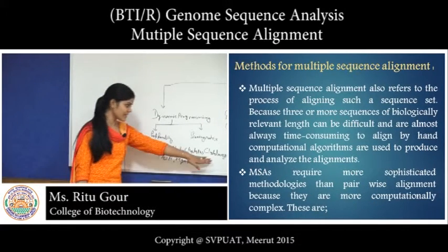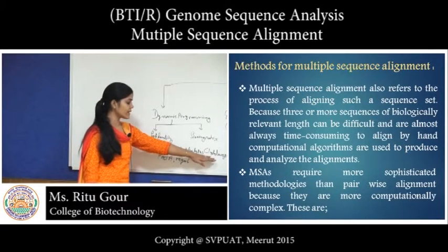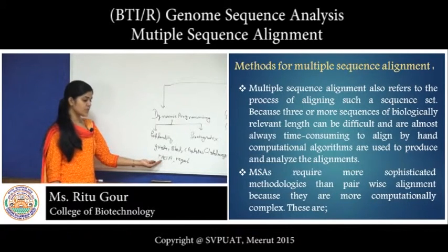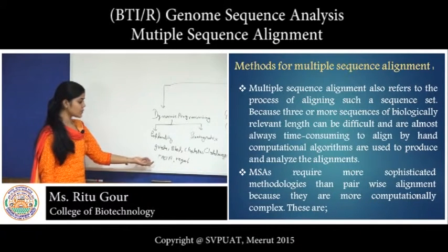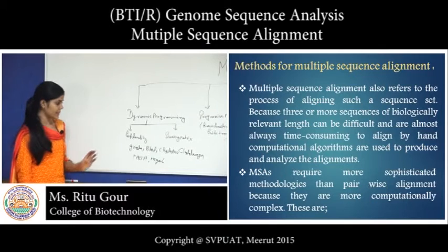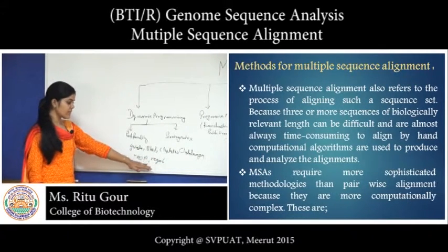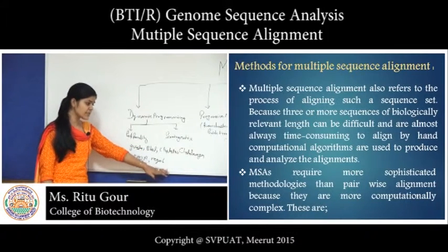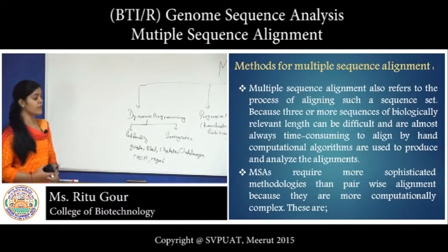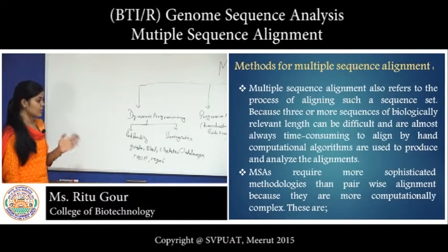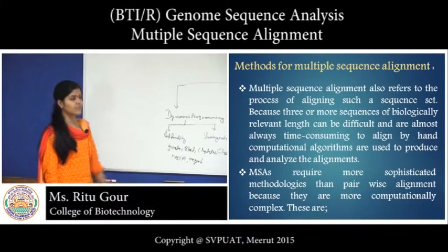Clustal Omega is the same as ClustalW but has replaced it. FASTA is also used for the sequence alignment process, but it is used for two sequence alignments at a single time; it is completely correlated to BLAST but faster. MEGA6 is also used for multiple sequence alignment and provides a phylogenetic tree. The phylogenetic tree has two types of files: first is the ALN file and the DND file, and with the help of those files we can find out how much these sequences are similar to each other.